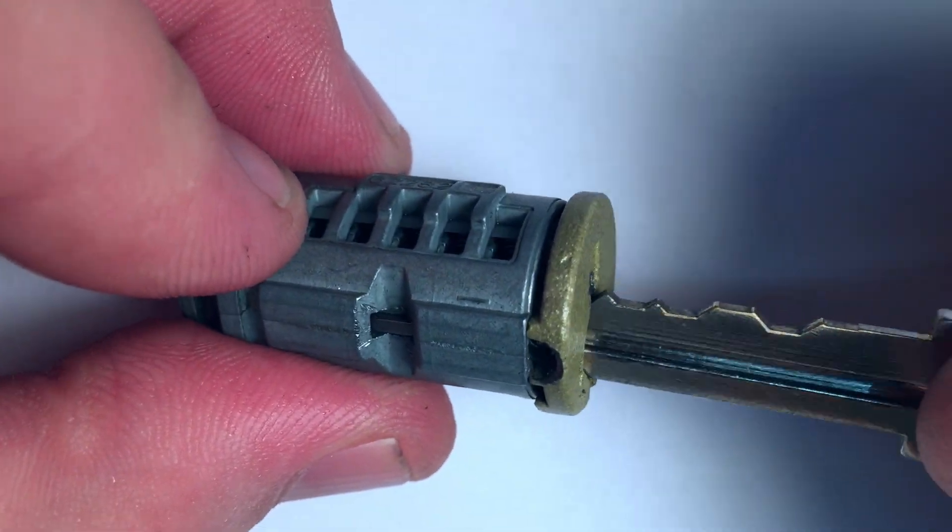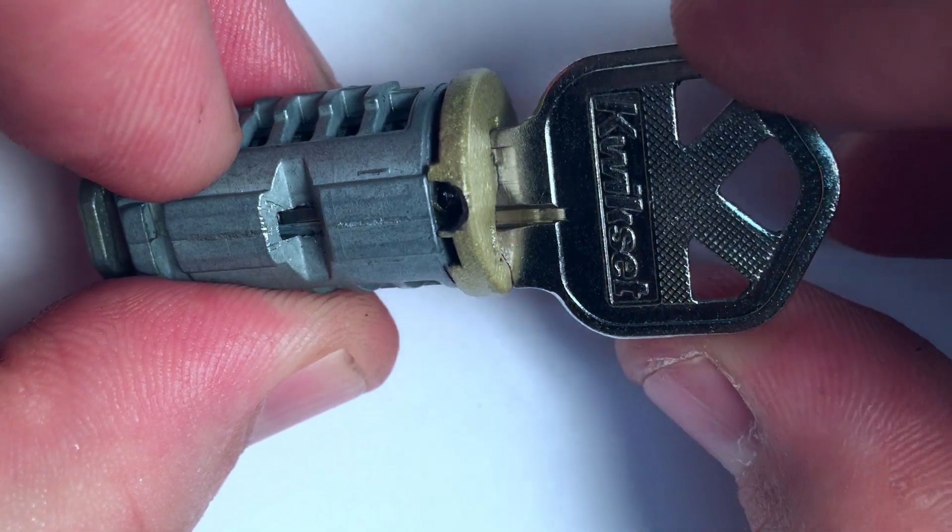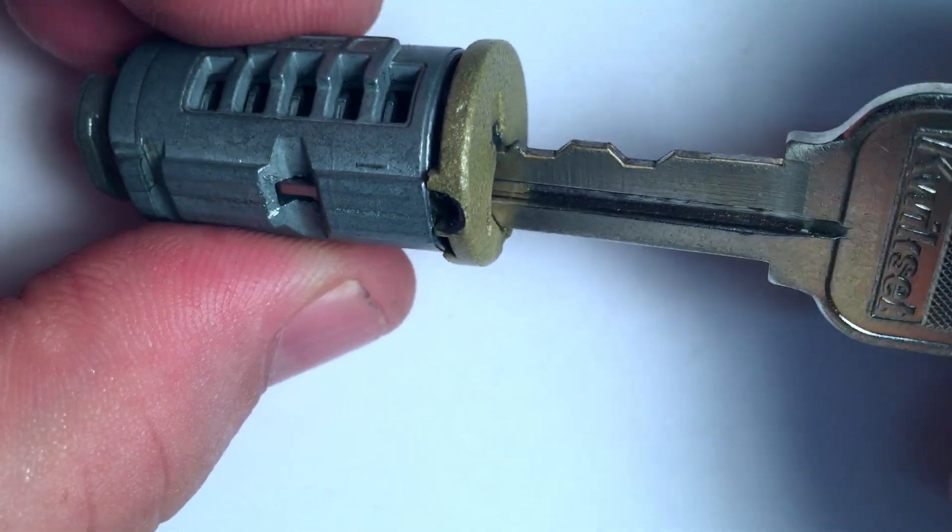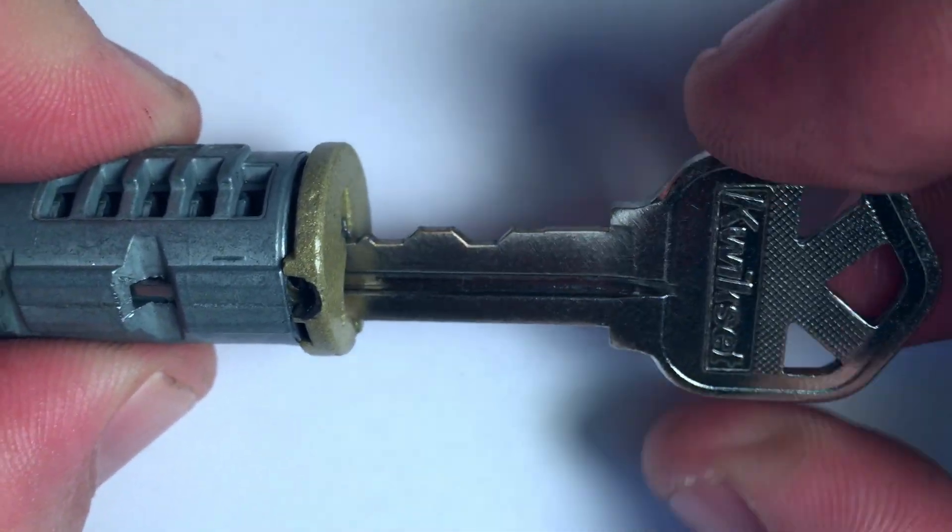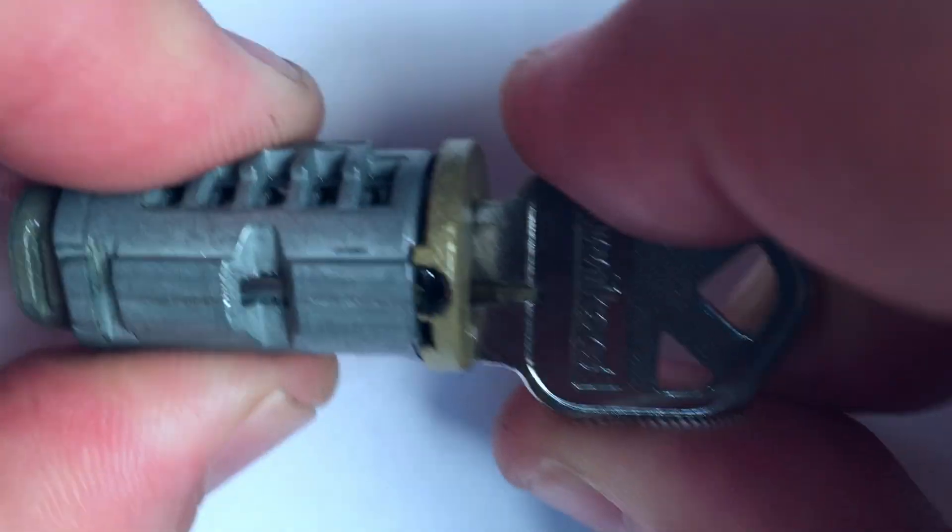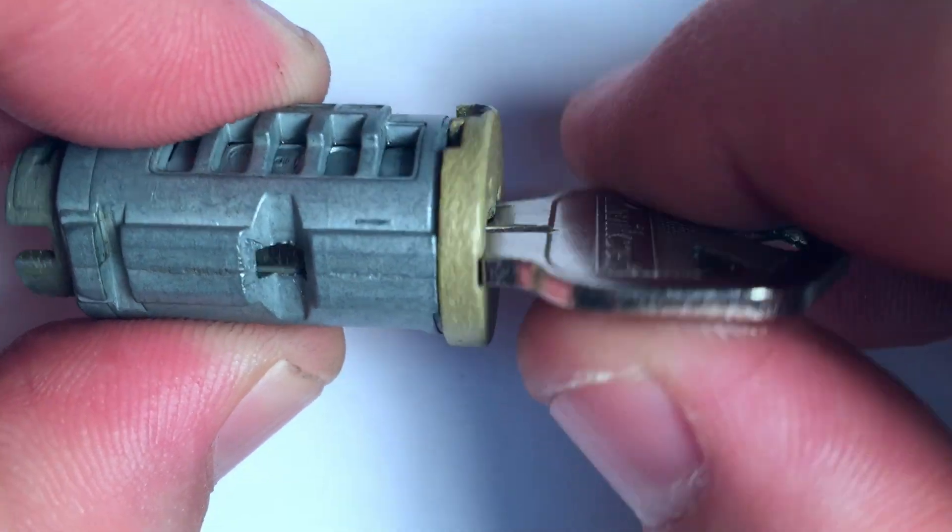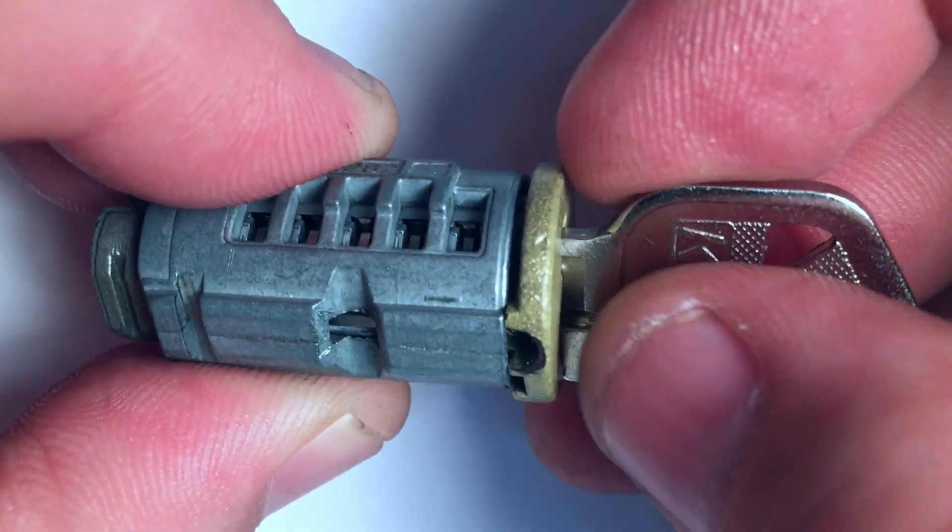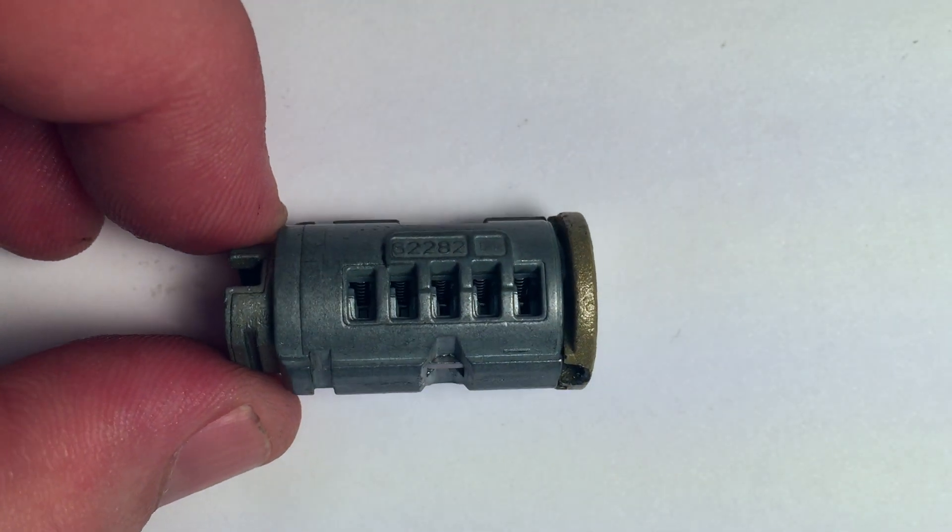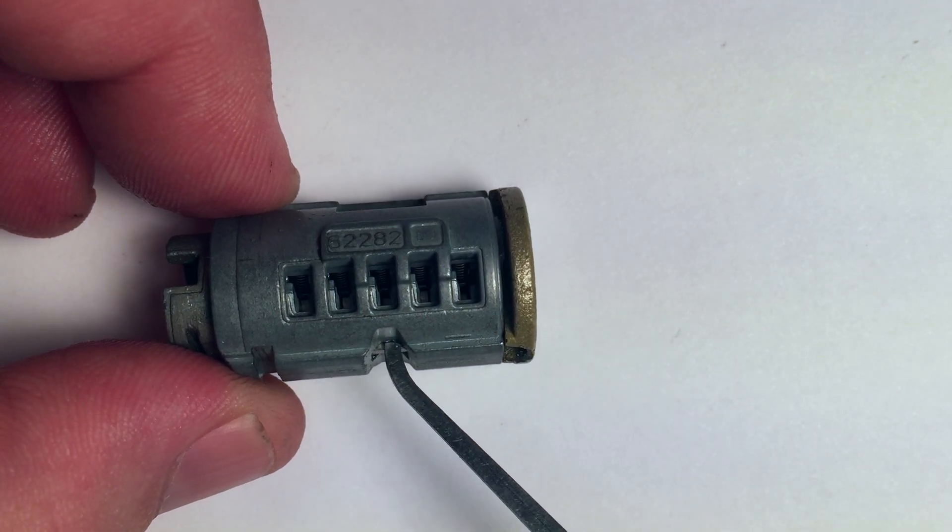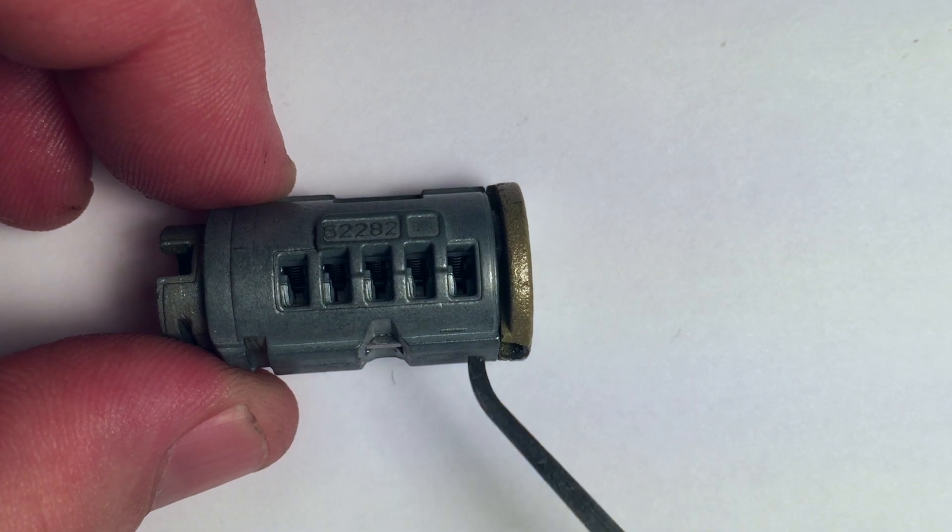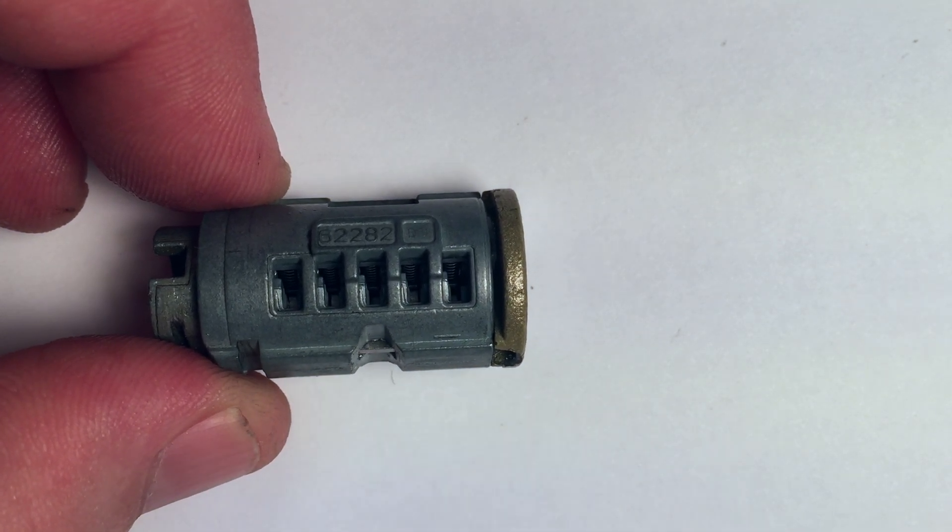If I put the key in, the plug does turn. But what's really interesting is if I put the key partially in, tension the core slightly with some rotational force, then slide the key all the way in, it won't turn. I have to let off all the tension, then it'll turn. Kwikset has completely removed our ability to tension this core. That's because of the square shape of this sidebar.